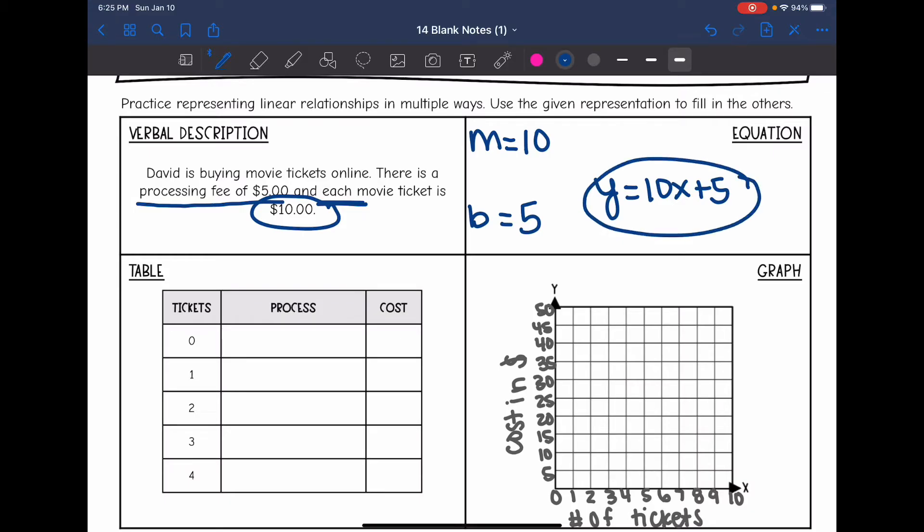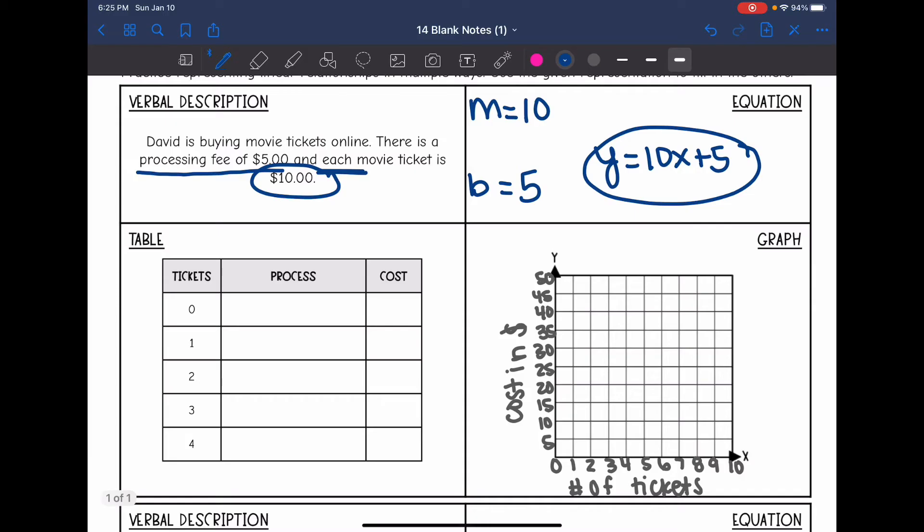Now let's fill out the table to get ordered pairs for our graph. They have already given us the x or input values for the ticket. We will plug it into our equation here to determine the cost or the y values.